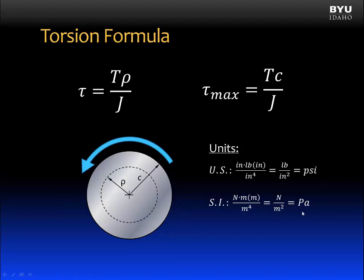This is exactly what we expect since the unit of stress does not change whether we're looking at axial loads or torsional loads or any other loads. The stress is always in US units pounds per square inch. And in SI units, newtons per meter squared.